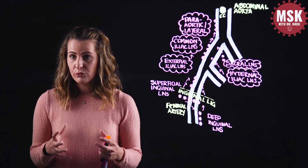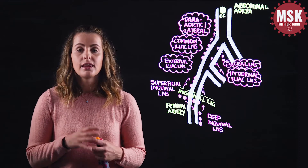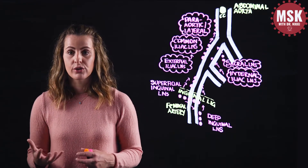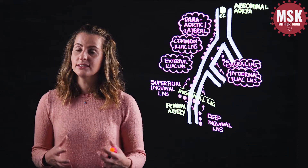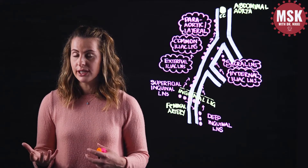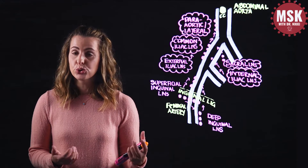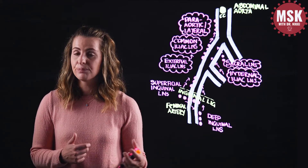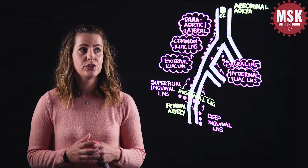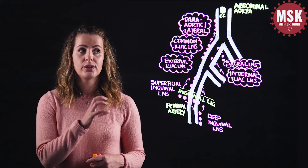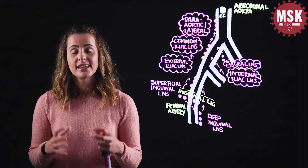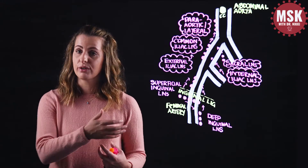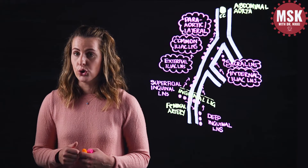Specifically, looking at the gonads, these lymph vessels course with the ovarian artery in females. This means that lymph from the ovary and from the lateral two-thirds of the uterine tube, including the ampulla, drains directly into the para-aortic nodes. Lymph from the fundus of the uterus can also drain directly to the para-aortic nodes.